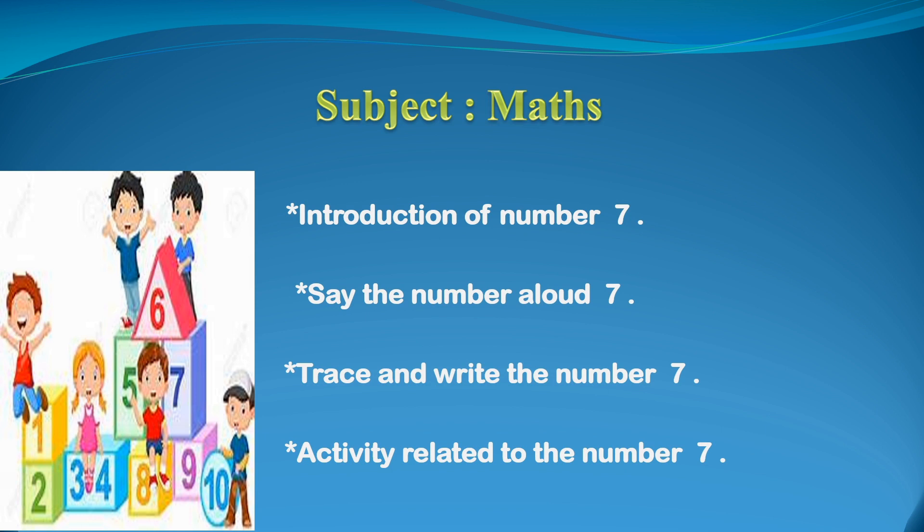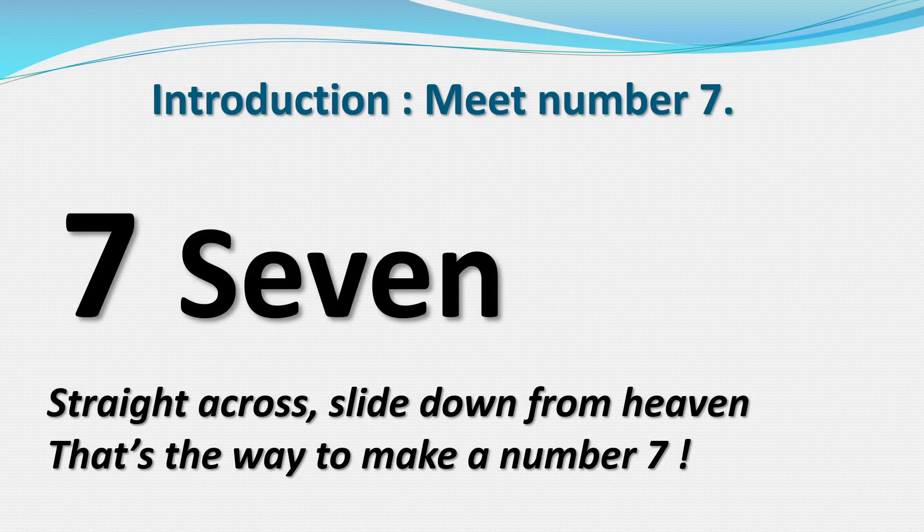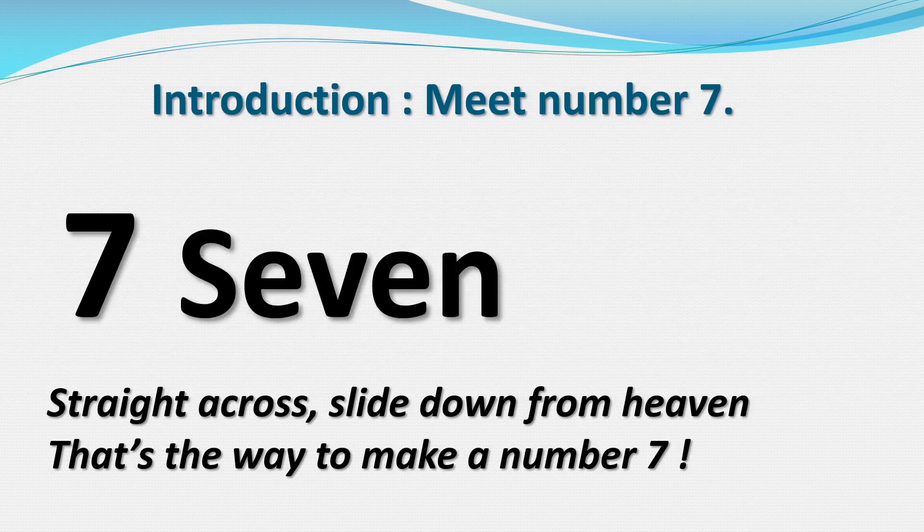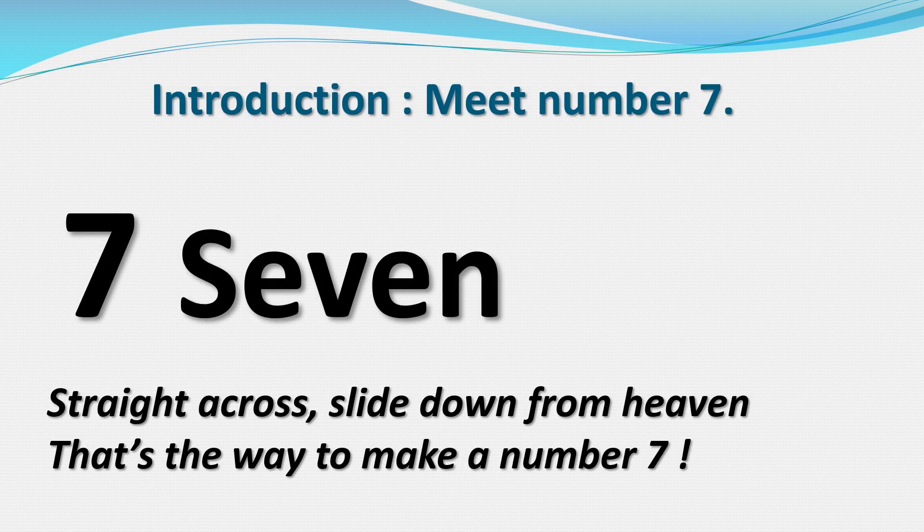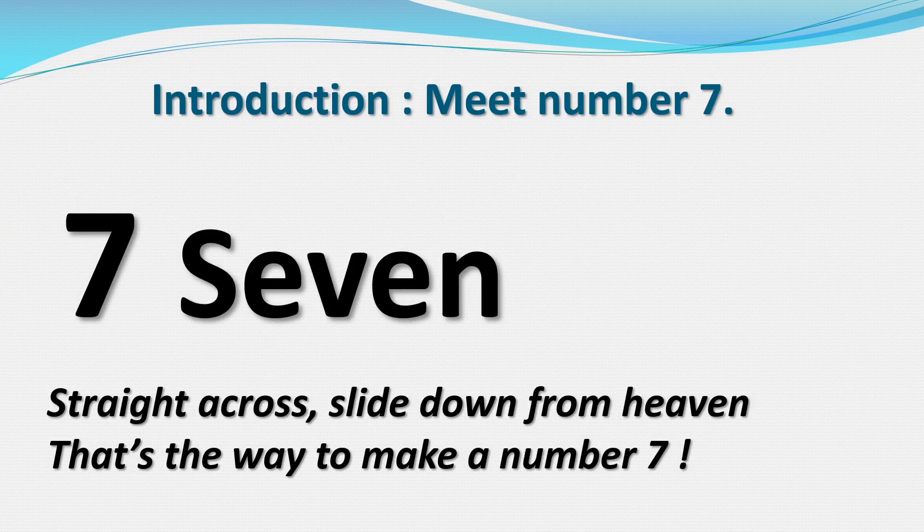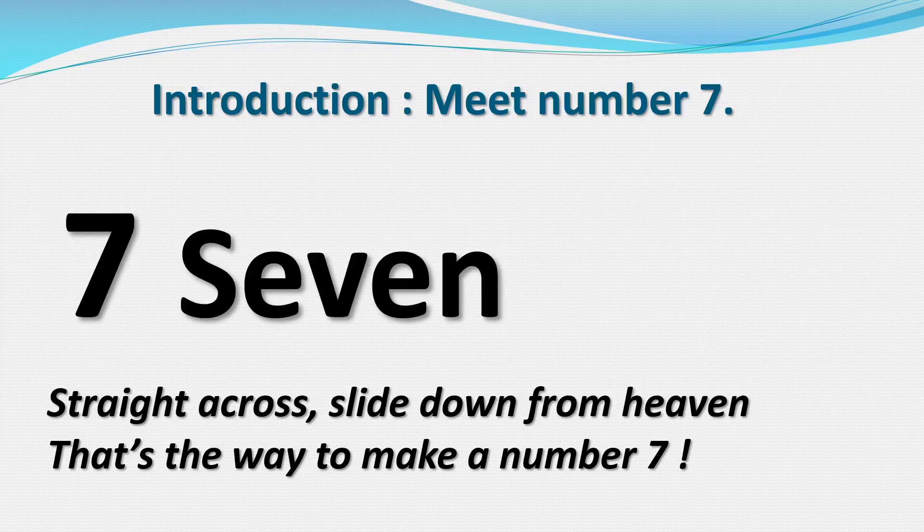So let's get started. Here you can see number seven. How to write number seven? Straight across, slide down from heaven, that's the way to make a number seven. Shall we repeat again? Straight across, slide down from heaven, that's the way to make a number seven.